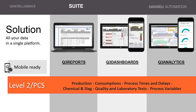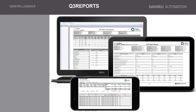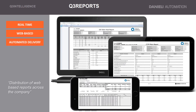Thanks to direct interfaces to process control and manufacturing execution systems, full coverage of the plant data is ensured. Q3 Dashboards allows the distribution of web-based reports across the company intranet and extranet. Each report can be exported in various standard formats, for example Excel or PDF.